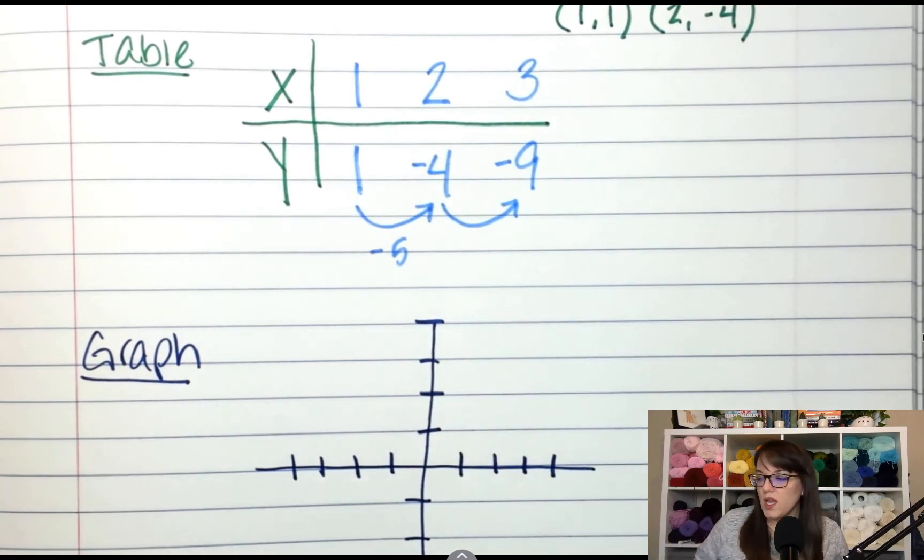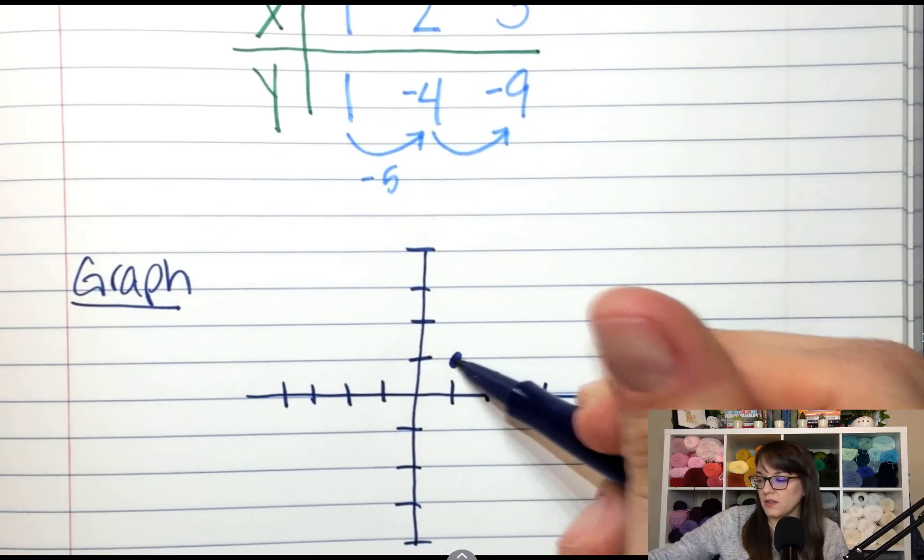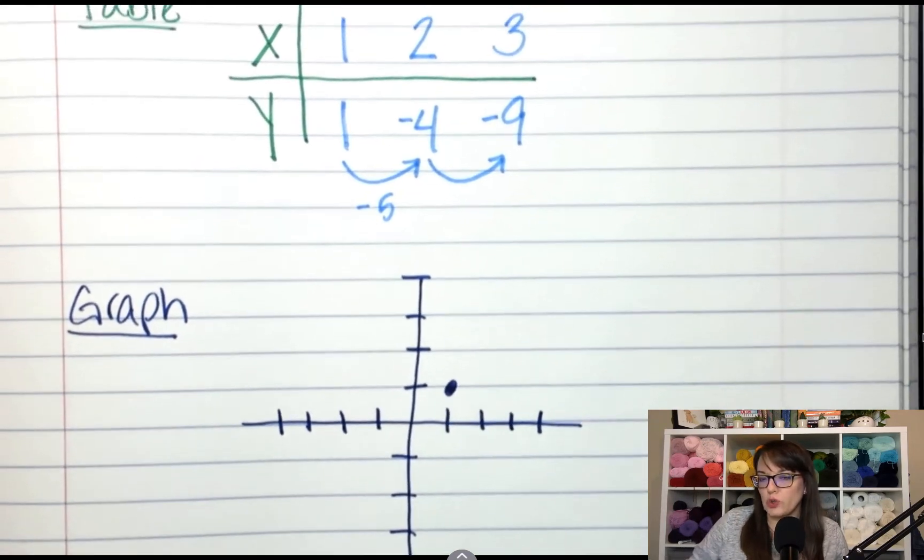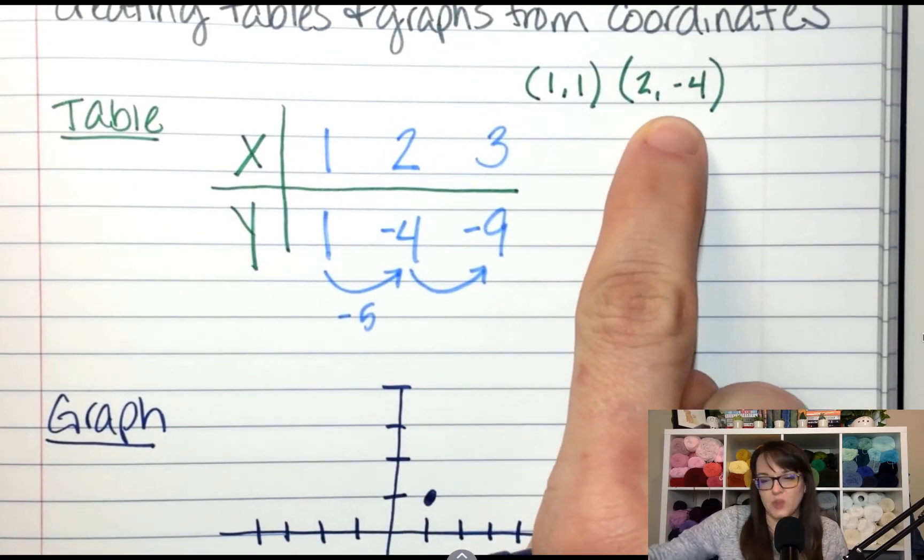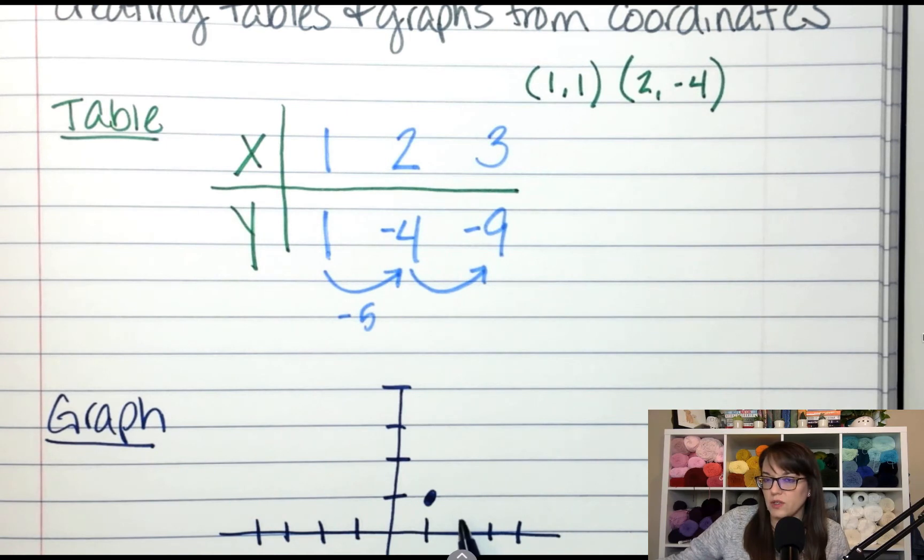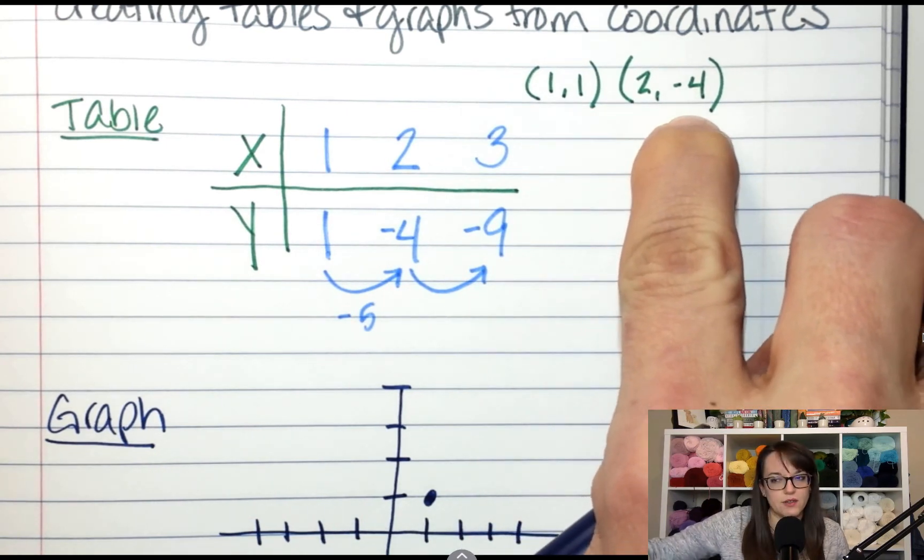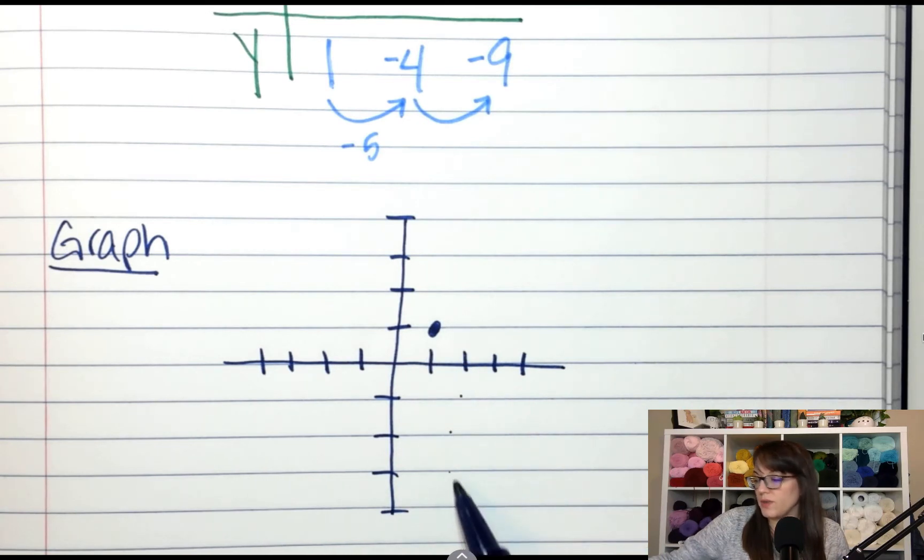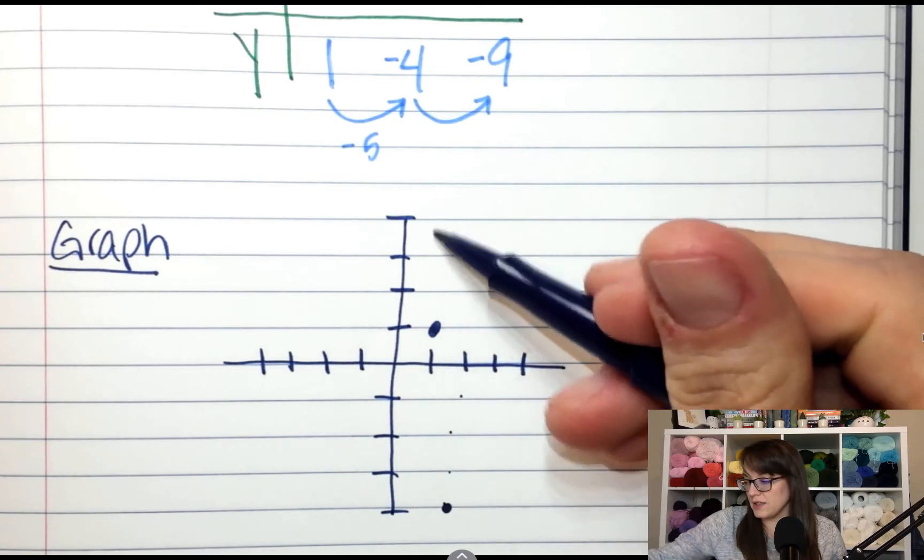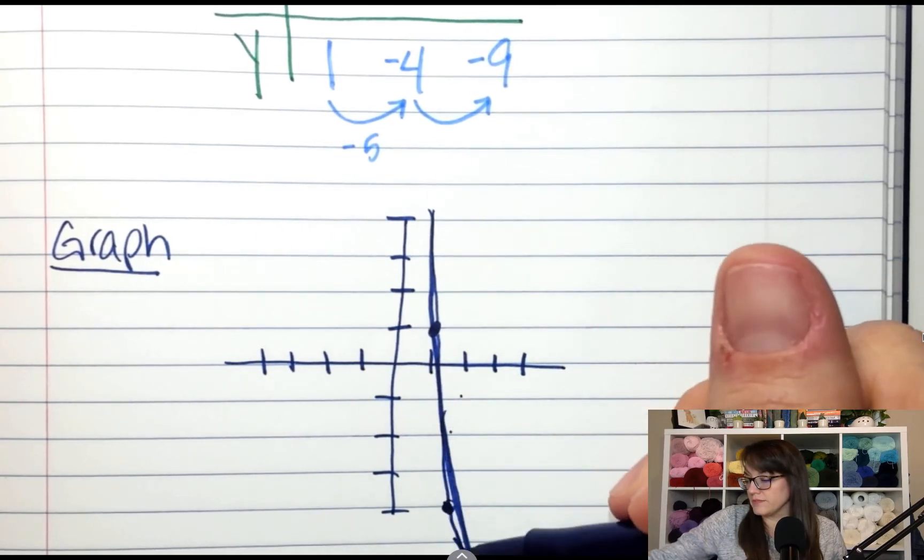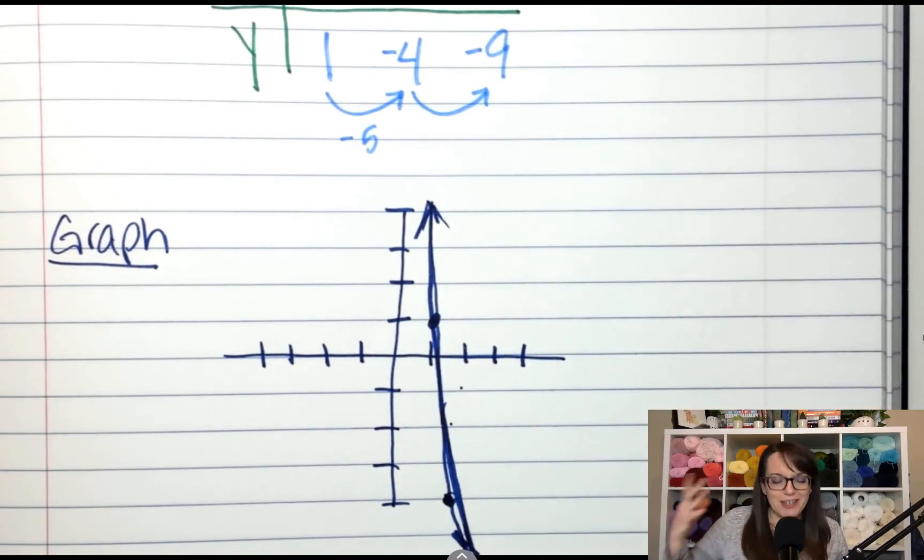All right, so (1, 1) is right here. I start at the origin and I'm going to go positive 1 X, positive 1 Y right there. What about (2, -4)? The X coordinate here tells me to do what? I'm going to go right 2, 1, 2. The Y coordinate tells me to do what? I'm going to go down 4. So if I go right 2 and down 1, 2, 3, 4, here's my next dot. And I'm going to connect these two dots. It's a steep line. Oh, I missed. Sure. You get the idea. It's a little line. But it works and you would be able to find it if it's a multiple choice.